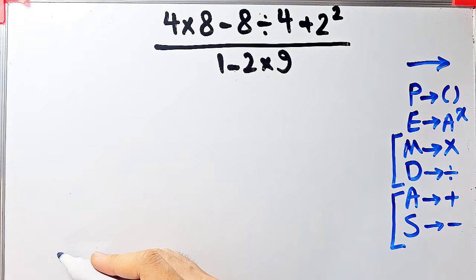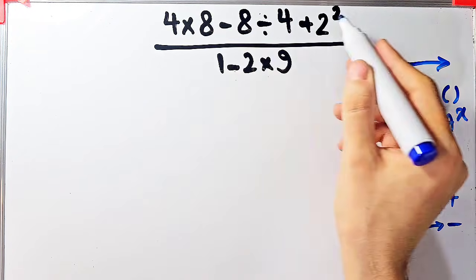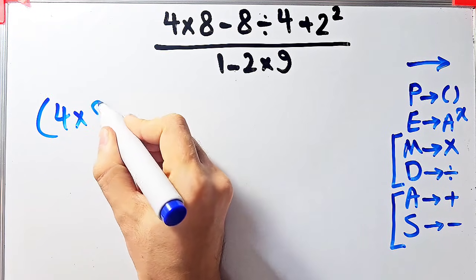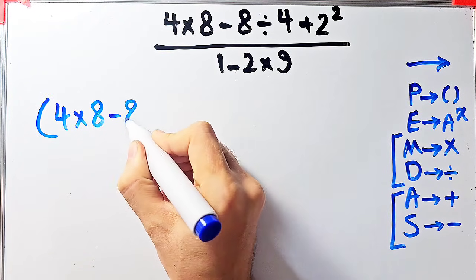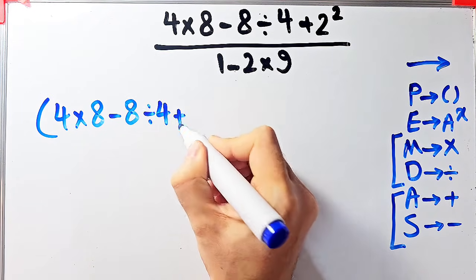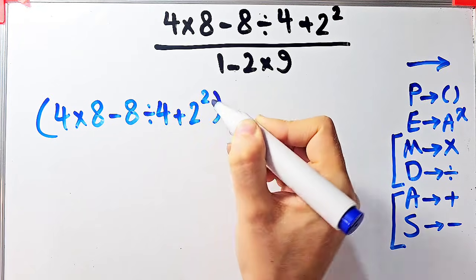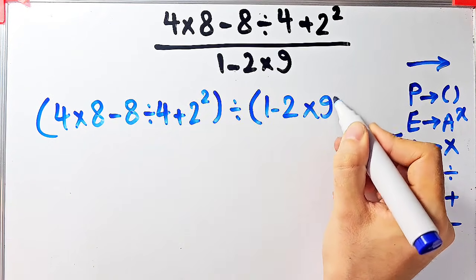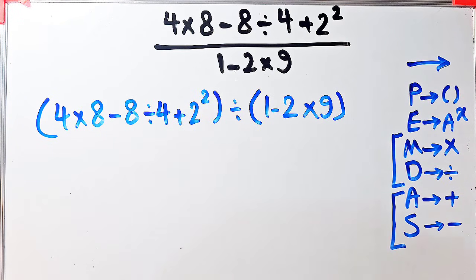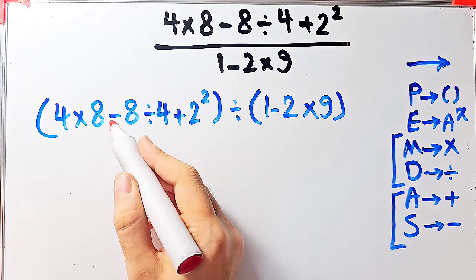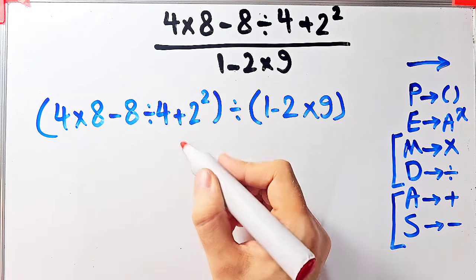Let's simplify and solve this question step by step together. We have 4 times 8 minus 8 divided by 4, then plus 2 to the power of 2 in the numerator, and in the denominator we have 1 minus 2 then times 9. According to the PEMDAS rule, first we simplify the parentheses. Inside the first parentheses we have multiplication, subtraction, division, and addition.